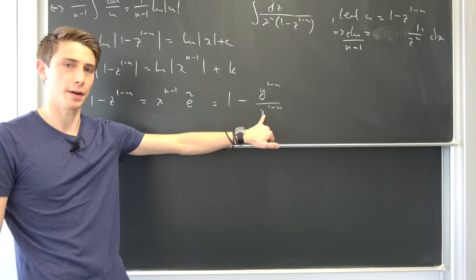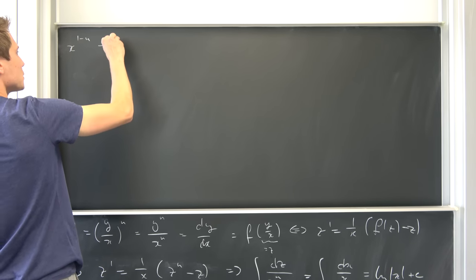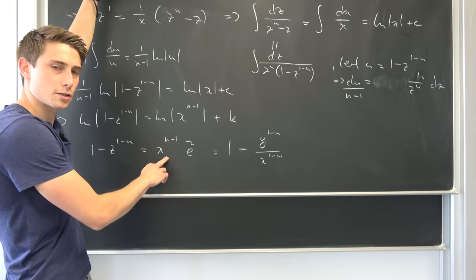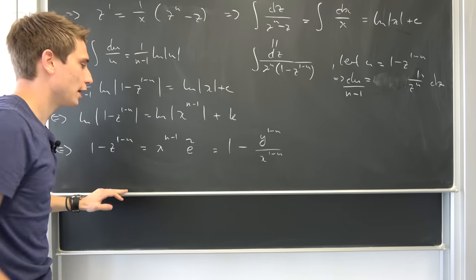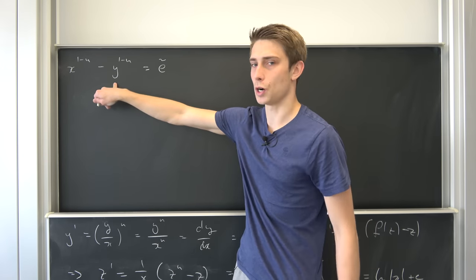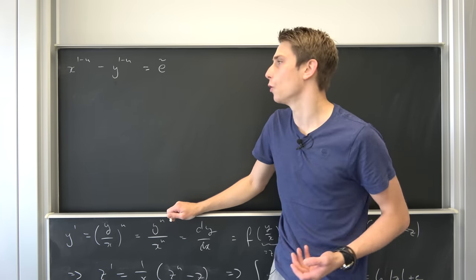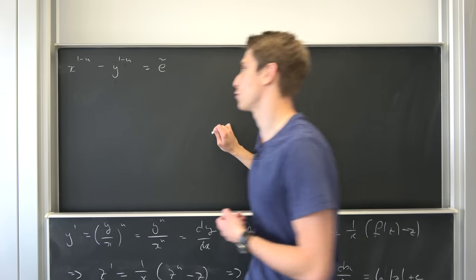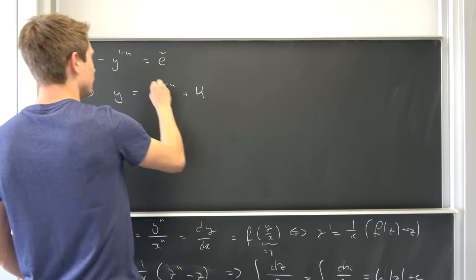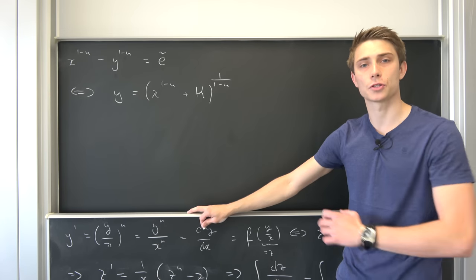We multiply both sides by x to the (1 minus n) power. On the left we get x to the (1 minus n) power minus y to the (1 minus n) power. On the right, x to the (1 minus n) power times x to the (n minus 1) power gives x to the 0 power, which is 1, times the constant — so just a constant. Adding and subtracting terms and absorbing into a new constant kappa, then raising both sides to the 1 over (1 minus n) power, we arrive at y equal to (x to the (1 minus n) power plus kappa) to the 1 over (1 minus n) power — the same standard result.